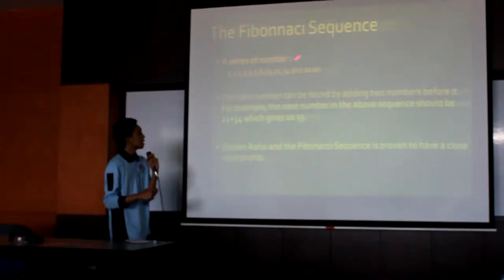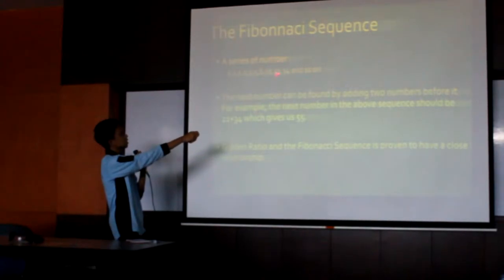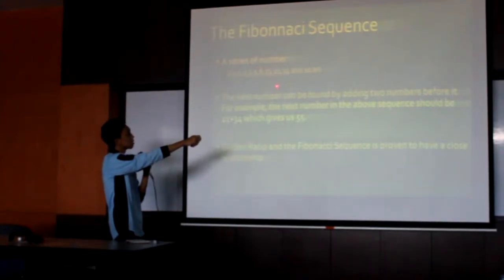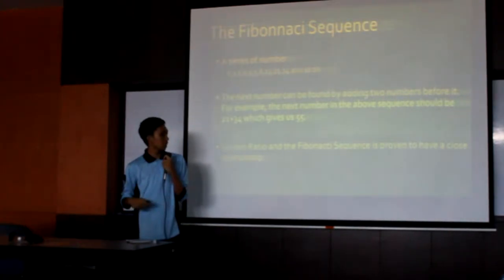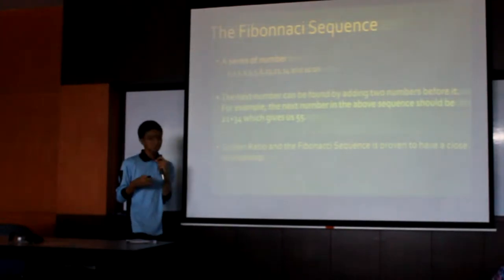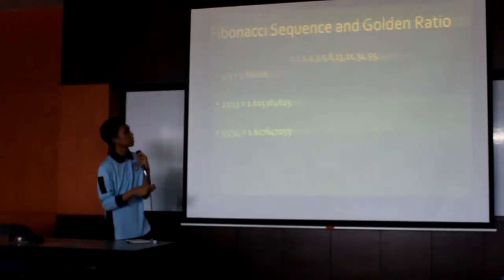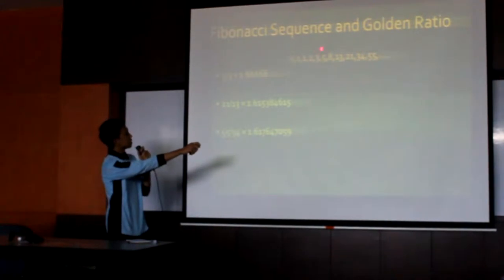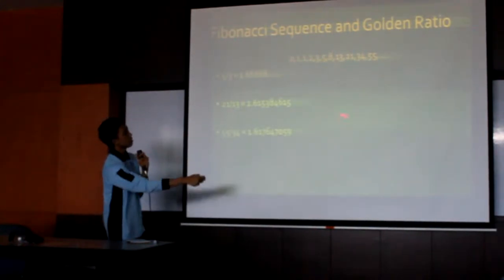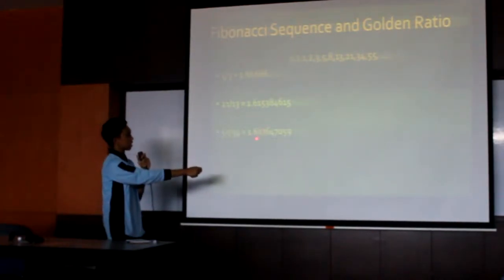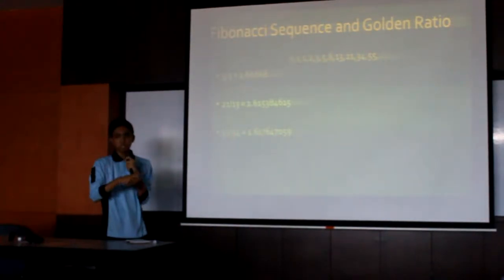To find the next number, you add the two numbers before it. So before we get 34, we add 13 and 21 to get 34. And to get the next number, 21 plus 34 gives you 55. The golden ratio and the Fibonacci sequence are proven to have a close relationship — if you divide 5 by 3 you get approximately 1.6667, and if you divide 55 by 34 you get a number almost equal to the golden ratio: 1.618.